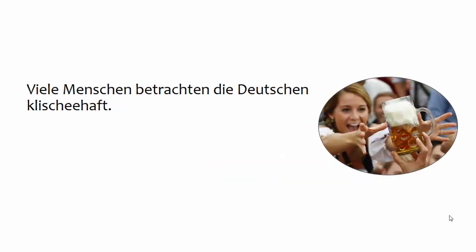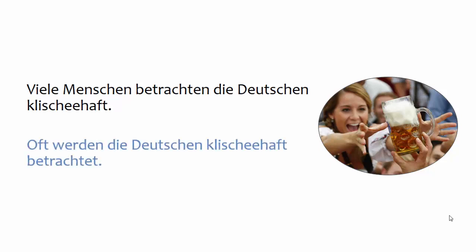Here's another example. Once I read a very good paper, written by a student, on stereotypes about the Germans. On your screen is a sample of what she wrote. My recommendation to this student would be to rewrite the sentence in passive. That takes the emphasis off of who is doing the stereotyping and puts it on the Germans themselves, which is, in the end, the point of the sentence.